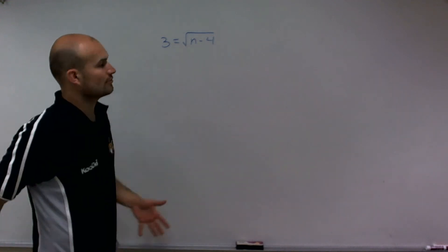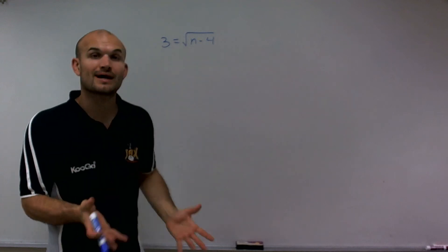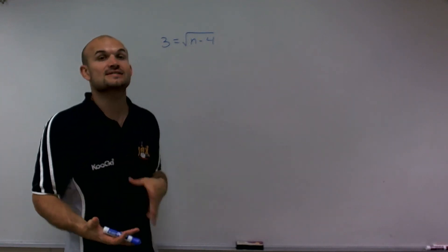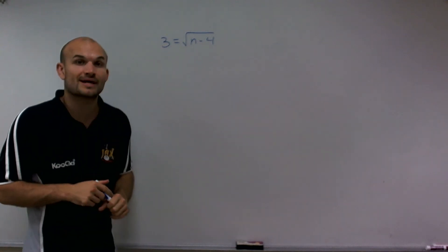So the first thing I want to do, and remember, when we're trying to solve for a variable, we've got to make sure we isolate it. It means undo all the operations that are happening to that variable. So here I have 3 equals the square root of n minus 4.